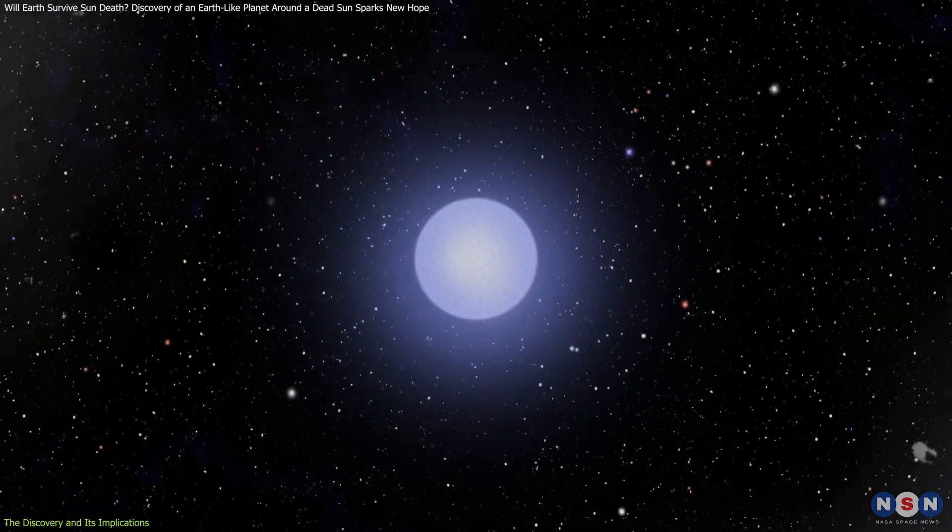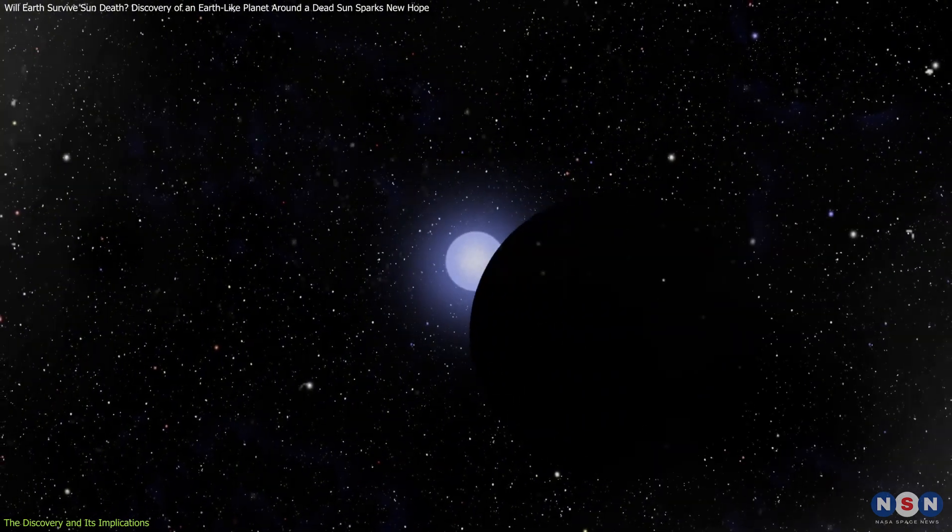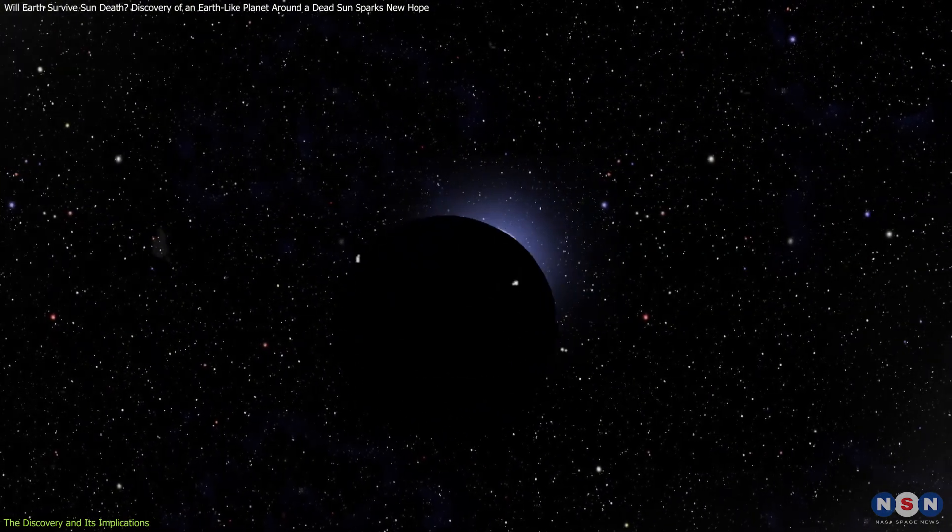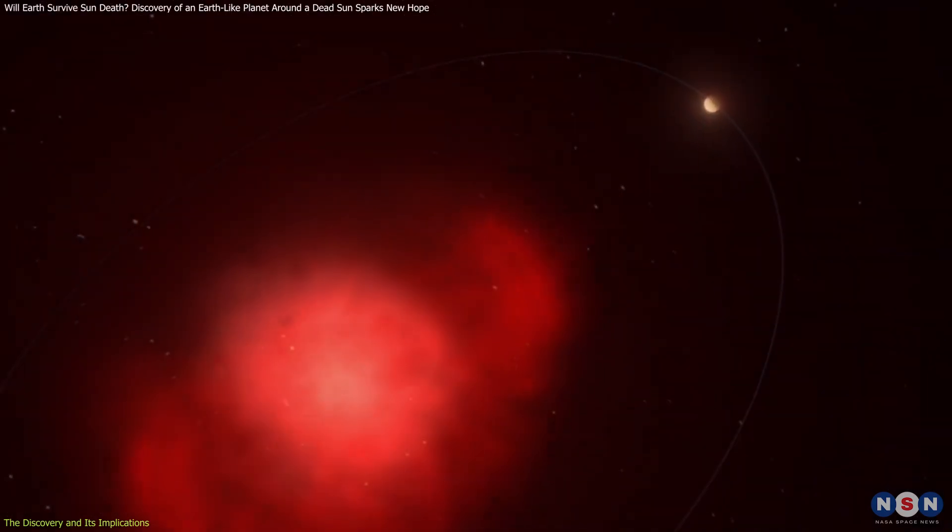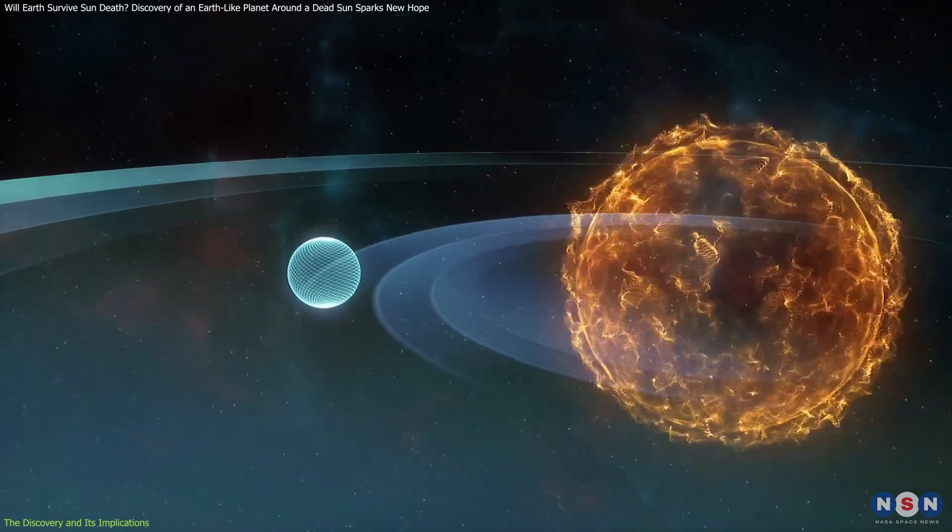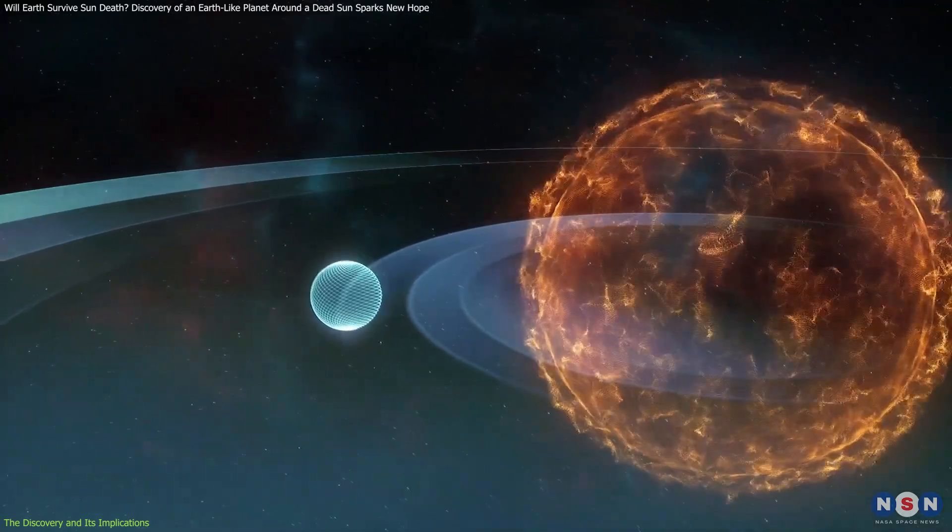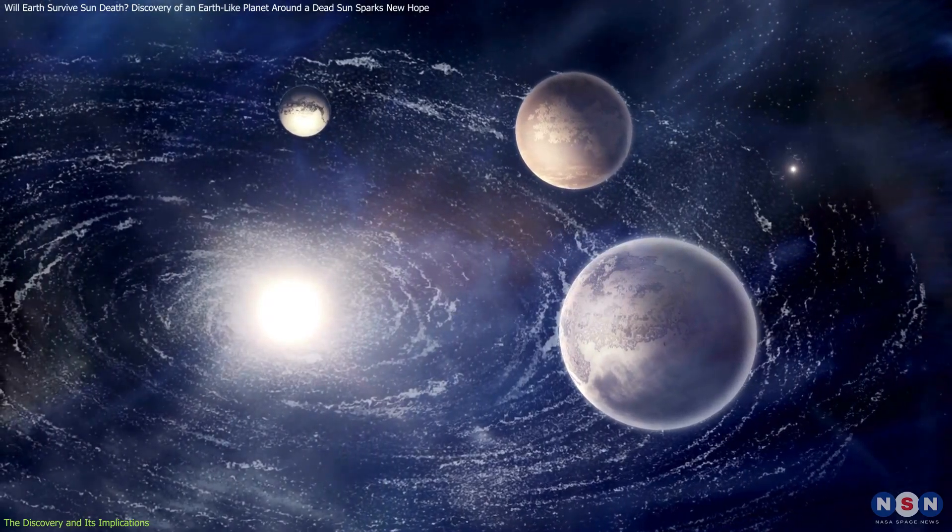The white dwarf, now about half the mass of the Sun but significantly smaller, roughly the size of Earth, is orbited by an Earth-sized planet that likely migrated outward during the star's red giant phase. This suggests that as stars expand and lose mass, their gravitational pull weakens, allowing planets to drift into more distant orbits.